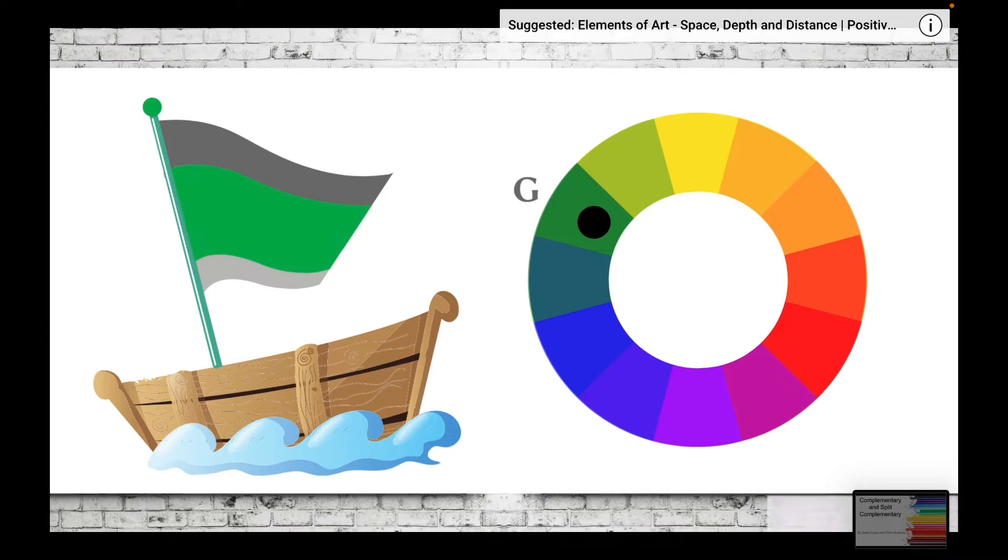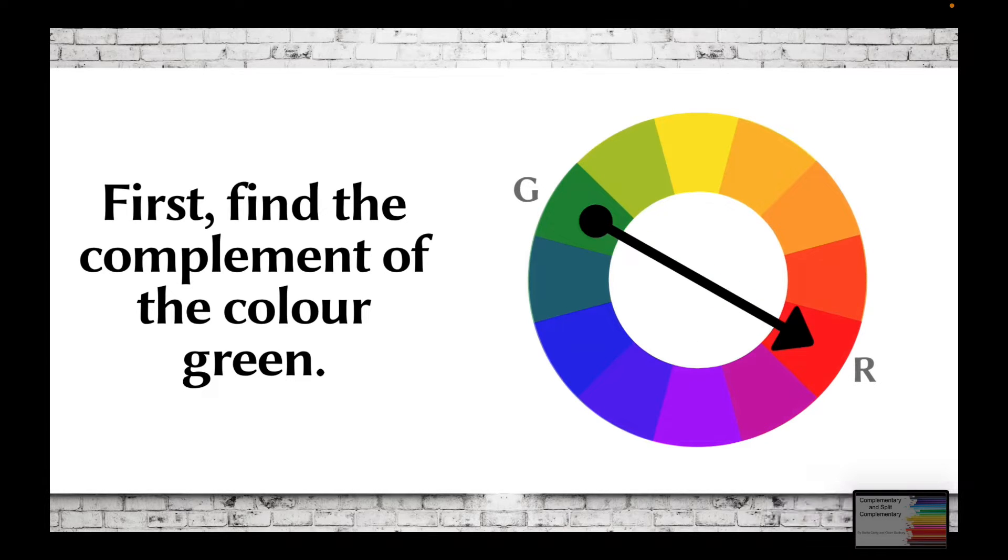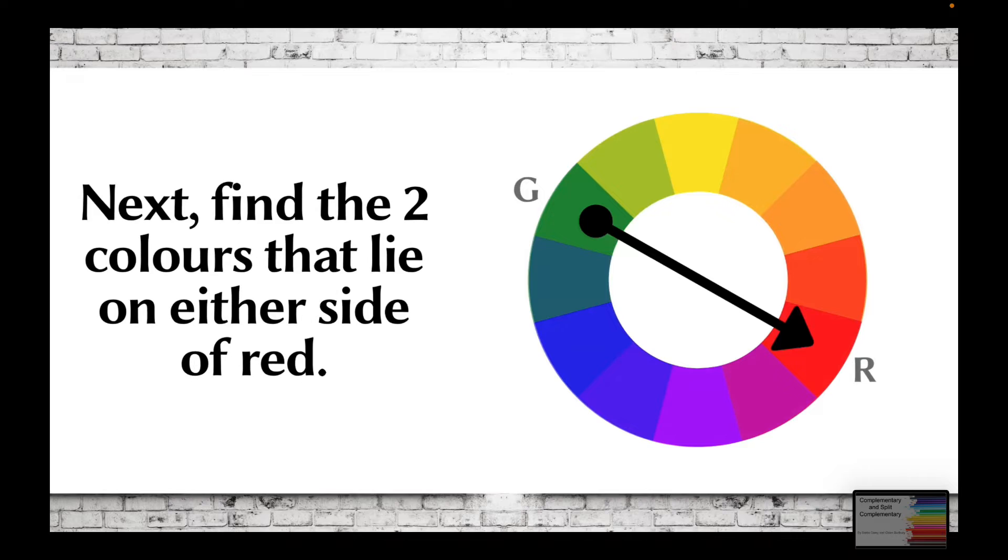So let's say I would like green to be my dominant color. I would first have to find the complement of the color green. The complement of green is red.